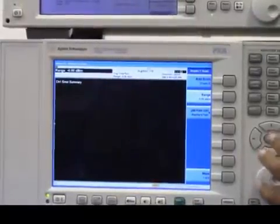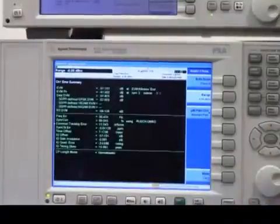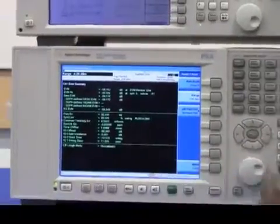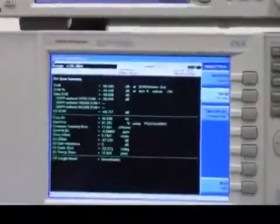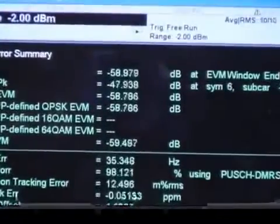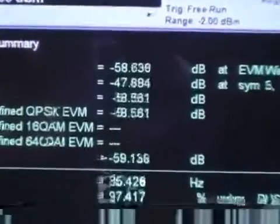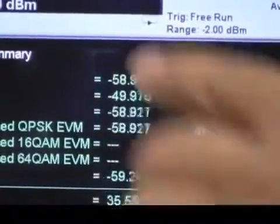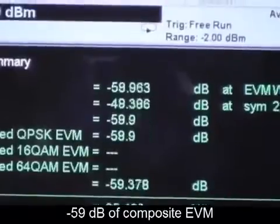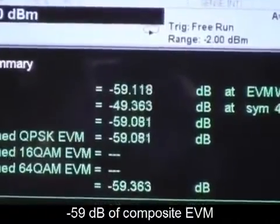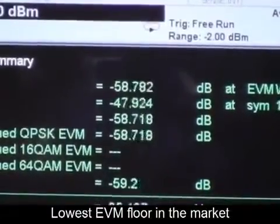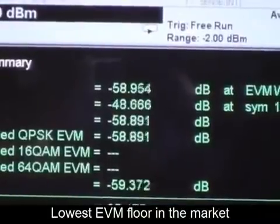At about minus 4 dB, I get the input overload message. I'm going to change that up by 2 dB. So at minus 2 dB, that's the optimum ADC range. And you can see, we're measuring about minus 59 dB of composite EVM, which is the lowest EVM floor of any signal analyzer in the market today.